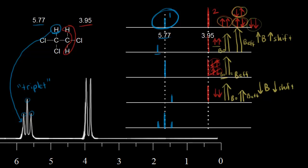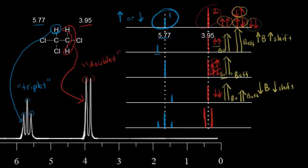What about the protons in red? They are affected by the magnetic field of the proton in blue. The magnetic field of the blue proton can be aligned either with or against the external magnetic field — two possible magnetic fields. Therefore the signal for the protons in red is split into two peaks. We call this a doublet. More about spin-spin splitting in the next video.